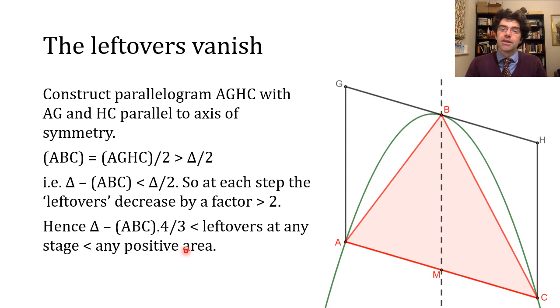Putting this together with the previous result, we see that there'd be a contradiction in saying that delta is either more than or less than four-thirds of the area of its associate triangle.